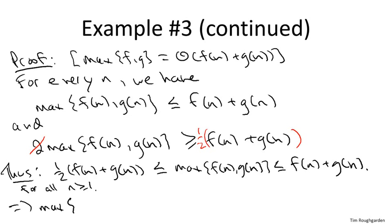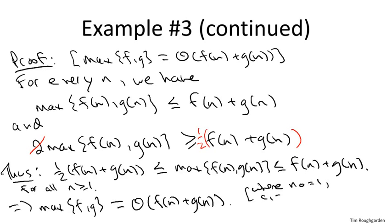And this is exactly what it means to prove that one function is theta of another. We've shown that for all n, not just for n sufficiently large, but in fact for all n, the point-wise maximum of f and g is wedged between suitable constant multiples of their sum. And again, just to be explicit, the certifying choices of constants are n naught equals one, the smaller constant is one half, and the bigger constant equals one. And that completes the proof.